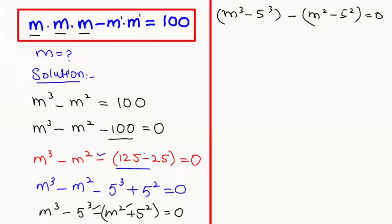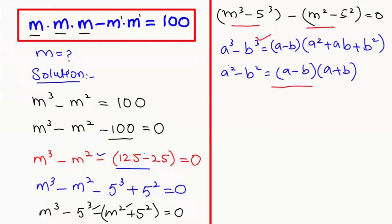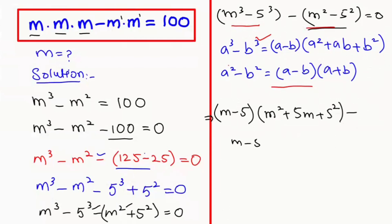Now here I'm going to apply the algebraic identities. The first is: a cubed minus b cubed equals (a minus b)(a squared plus ab plus b squared). The second is: a squared minus b squared equals (a minus b)(a plus b). Now I'm going to apply these formulas, so that equation turns to (m minus 5)(m squared plus 5m plus 25) minus (m minus 5)(m plus 5) equals zero.